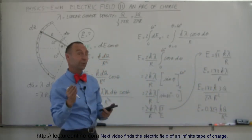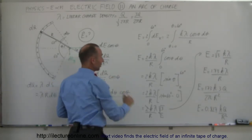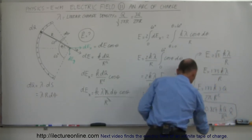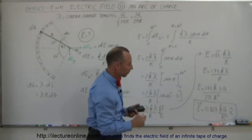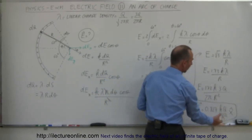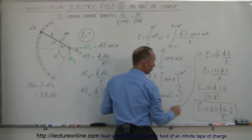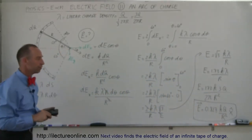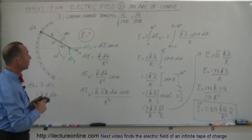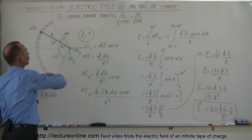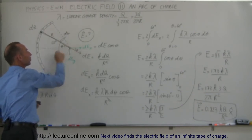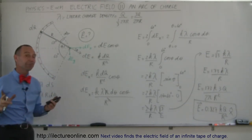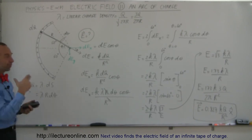If we want to express this as a vector, the field points to the right, so we add the unit vector in the x direction. Notice this is in the typical format KQ over R squared — where R squared is the distance squared to the point of interest — multiplied by the constant 0.827. This is the electric field due to an arc of charge, with the point of interest at the center of that arc. If the point is not at the center, that becomes a much more difficult problem for a different video.